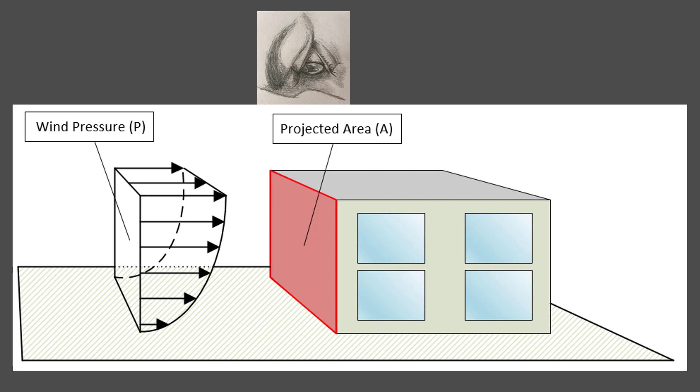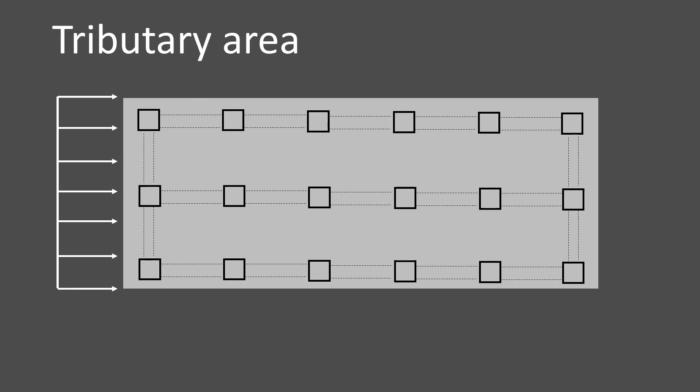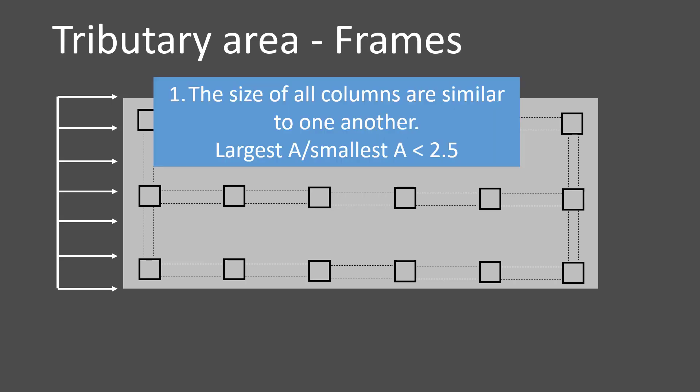We're going to first look at the top of the building down and look at it in plan view. Now in this building, these little squares at the corners are going to be the columns and these dashed lines are going to be the beams. The wind is going to be blowing from one side of the structure and we're going to be using something called tributary area. If you haven't seen me talk about tributary area before, you should probably watch the gravity load video. Now we're going to first be talking about frames. There are two assumptions with this. The first assumption is that the size of all the columns are similar to one another. That means the largest area divided by the smallest area is less than 2.5. Don't worry, we'll show you how to do some bigger columns later, but that is assumption number one. Number two, the building has to be mostly symmetrical, but again, there's more advanced techniques at the end of this video.